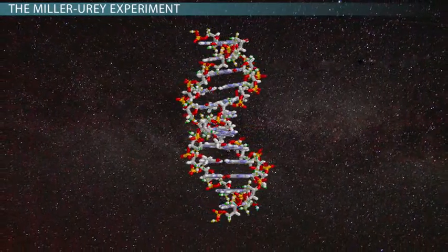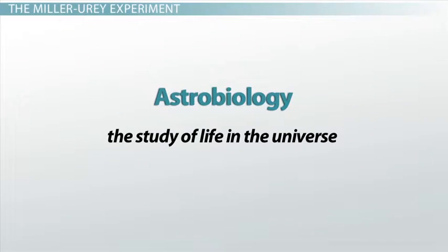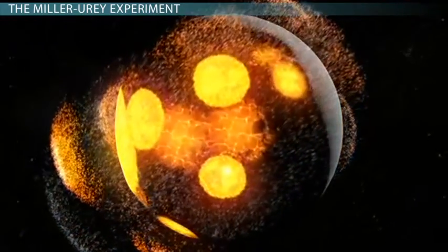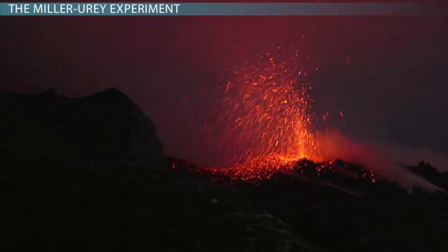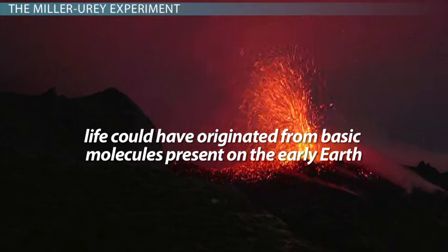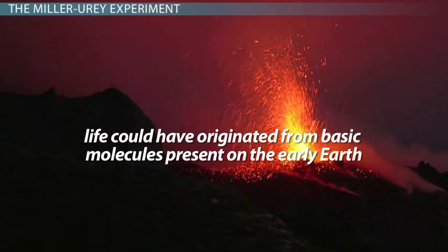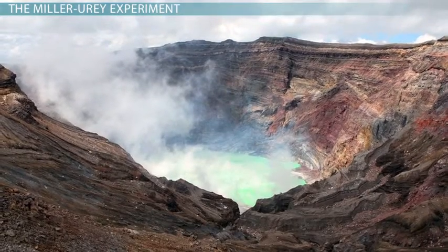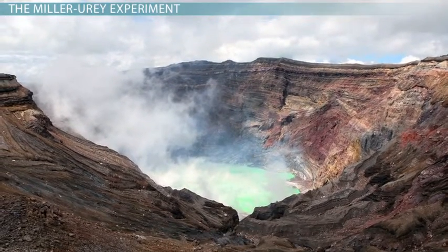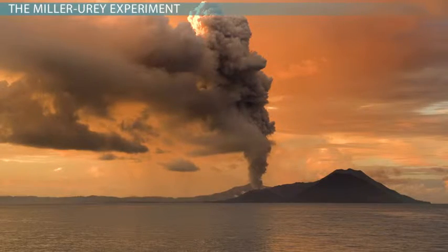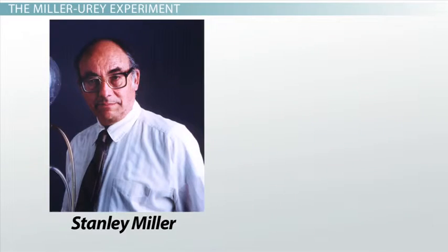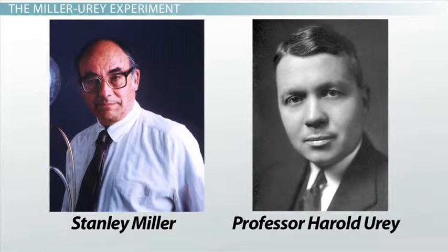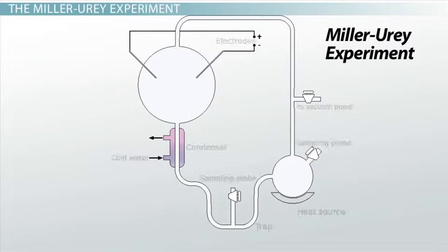Miller's experimental interests at the University of Chicago were in the field of astrobiology, which is the study of life in the universe including its origins and evolution on Earth as well as potentially elsewhere. The famous experiment Miller conducted in 1953 was based on a hypothesis that stated life could have originated from basic molecules present on the early Earth. The idea was that gases present in the atmosphere and in the seas of the primitive pre-life Earth could have been stimulated by lightning to react and produce the chemicals necessary for living cells to arise. Stanley Miller, under the guidance of Professor Harold Urey, set up the Miller-Urey experiment to test his hypothesis.